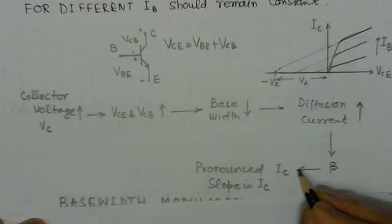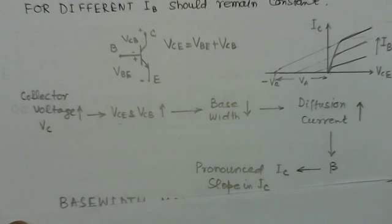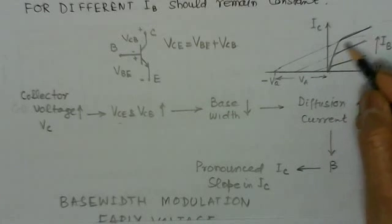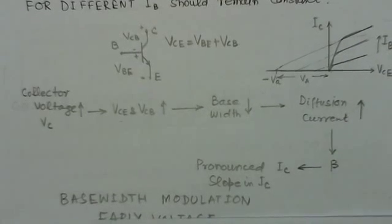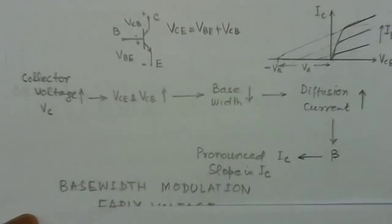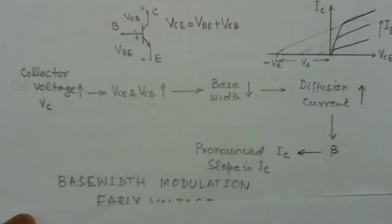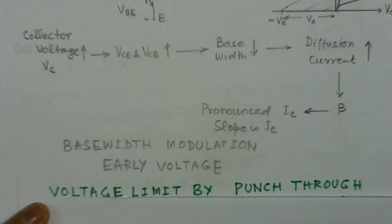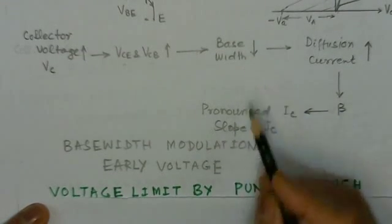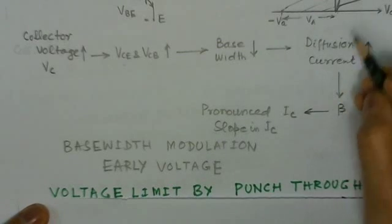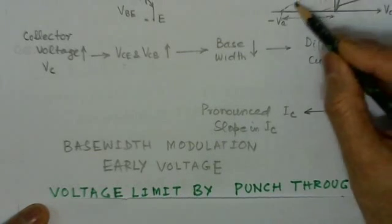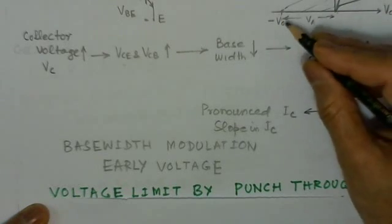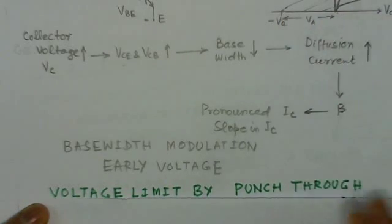With the increase of diffusion current, the beta will increase. And beta will increase, that means the value of the current will also increase. So there will be a pronounced effect of IC with increase in collector voltage. This effect is said to be base width modulation. The early voltage: if I extrapolate these characteristics, they meet at a point minus VA. This minus VA is to be the early voltage.